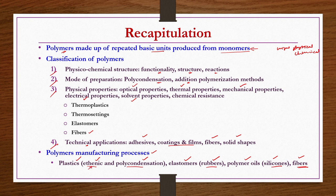Ethenic is derived from ethylene because most polymers produced under the ethenic category have double bonds and triple bonds, and such monomers undergo addition reactions to produce polymers—like ethylene monomer used to produce polyethylene.